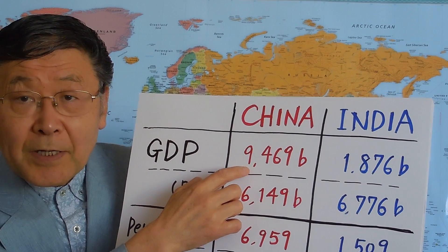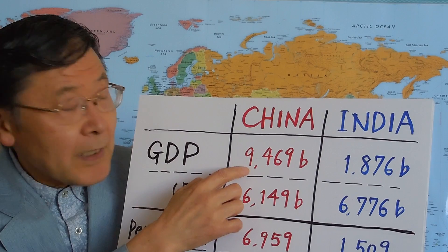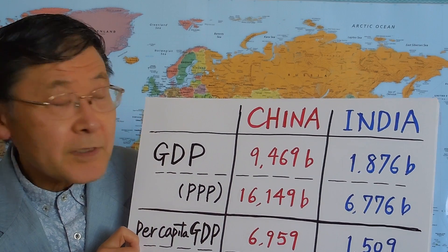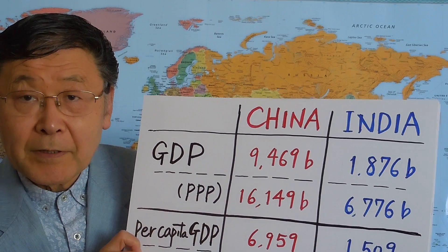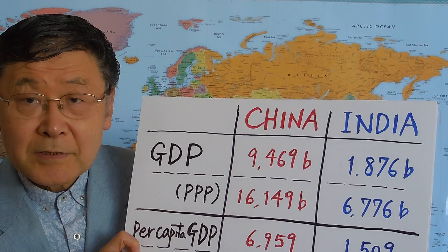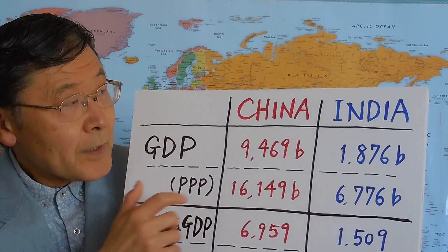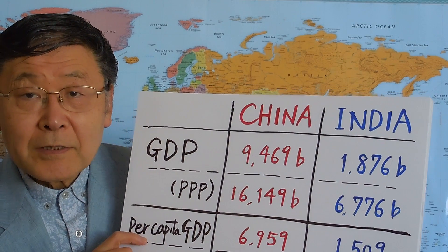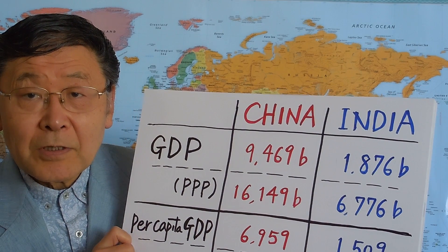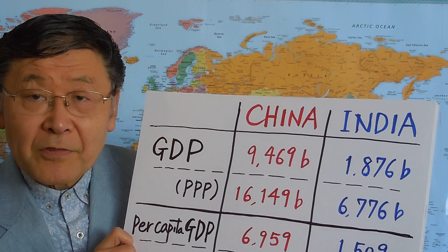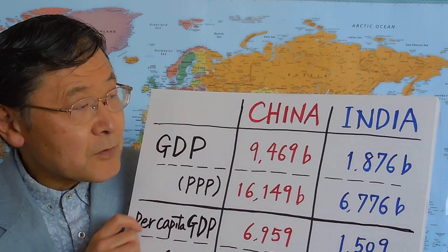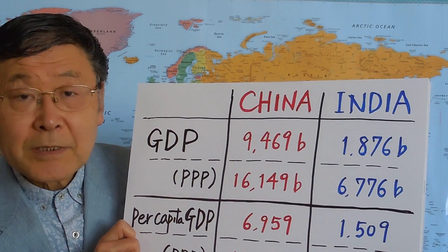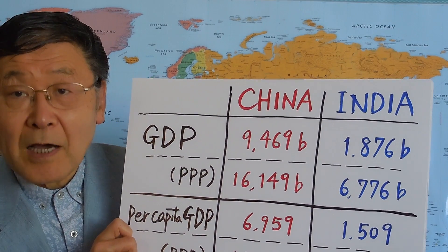China's GDP is $9,469,000,000,000, whereas the figure for India is only about one-fifth of that size — $1,876,000,000,000.